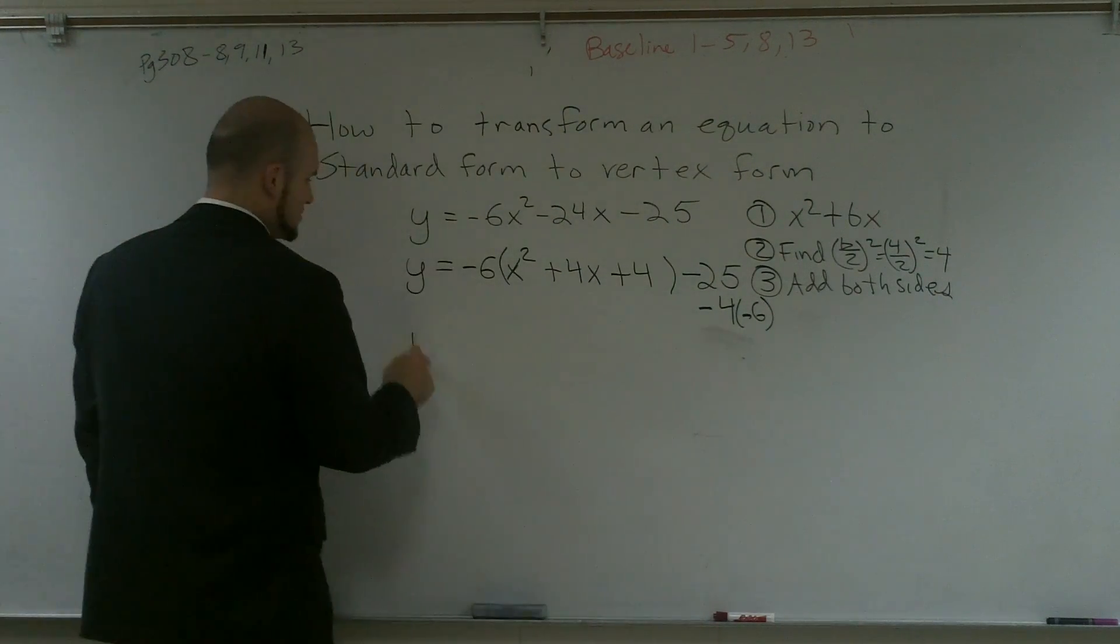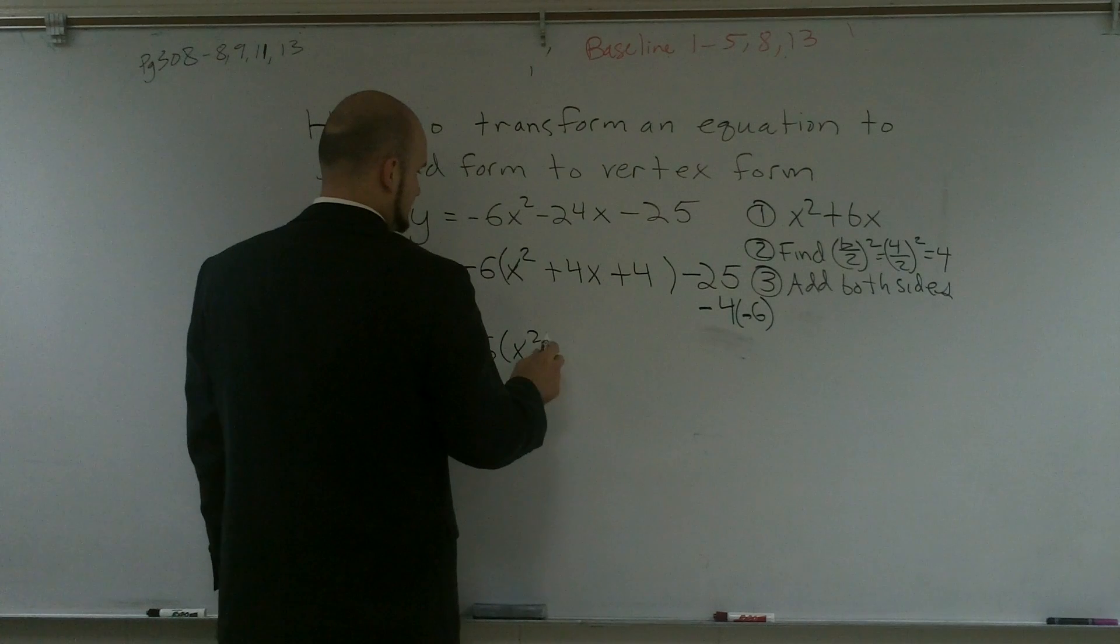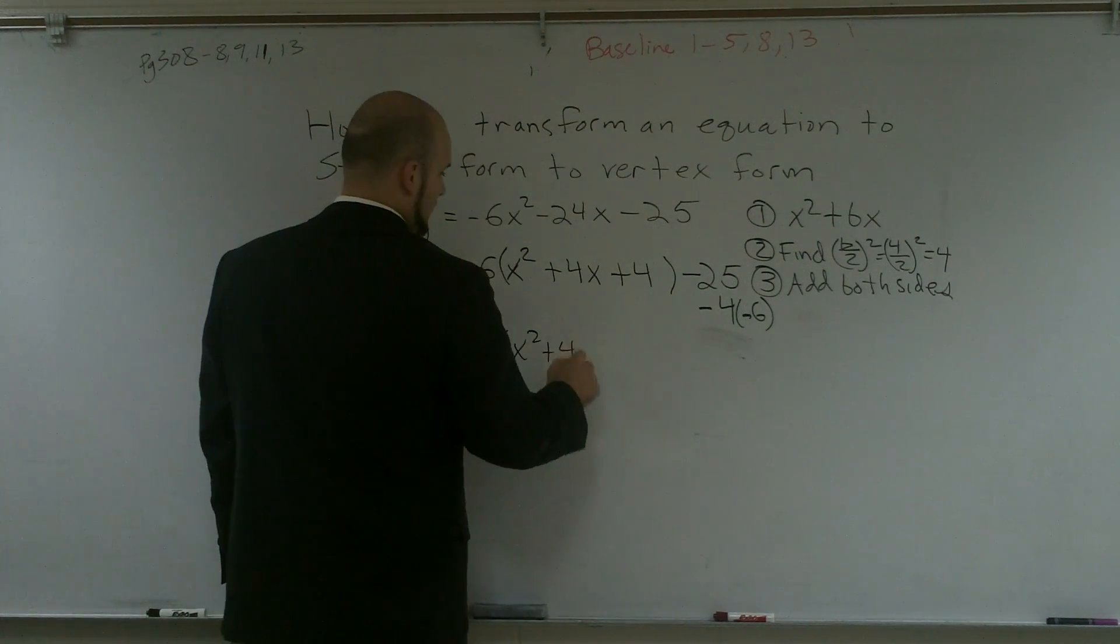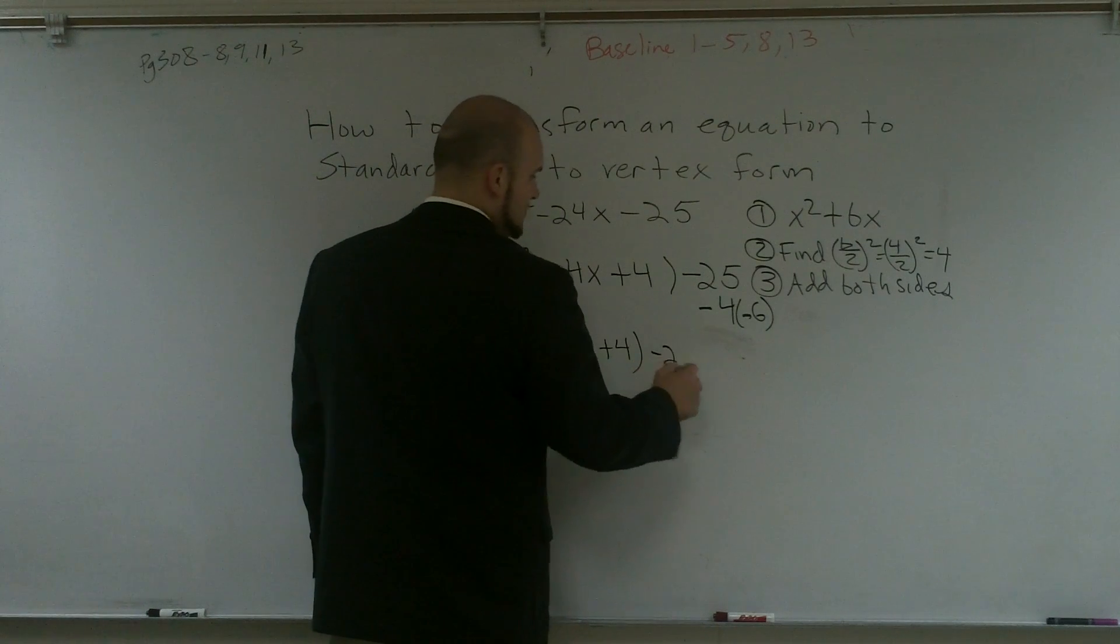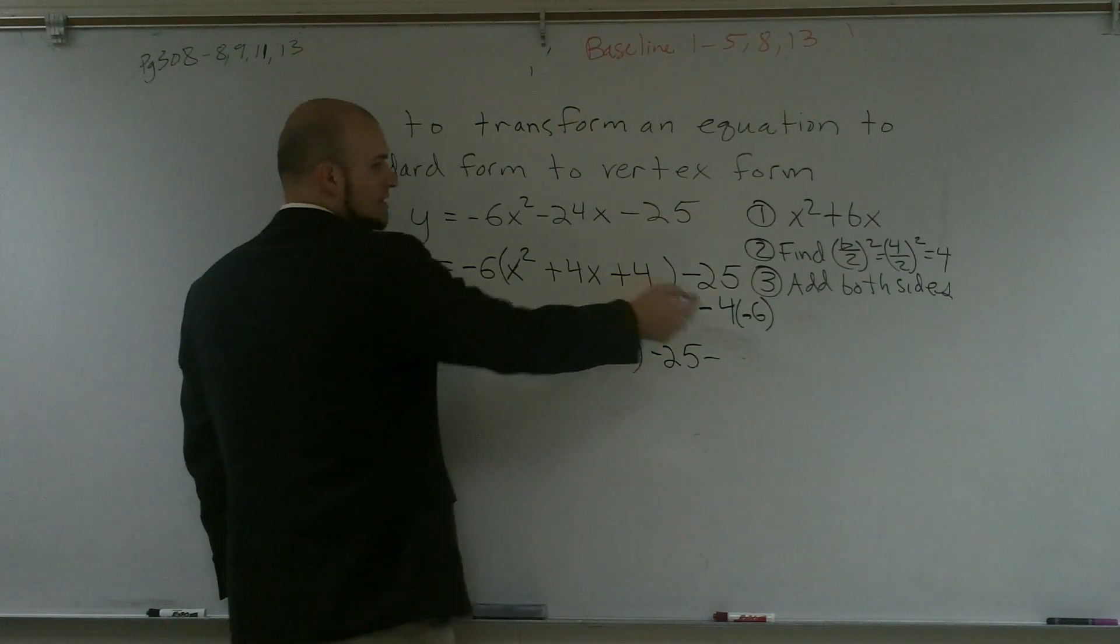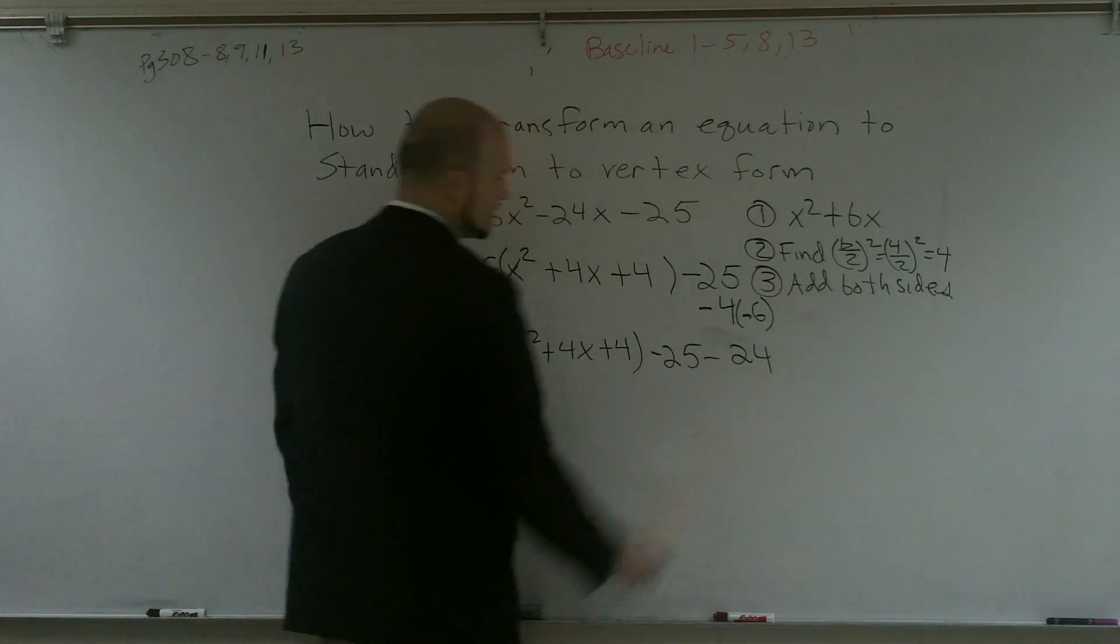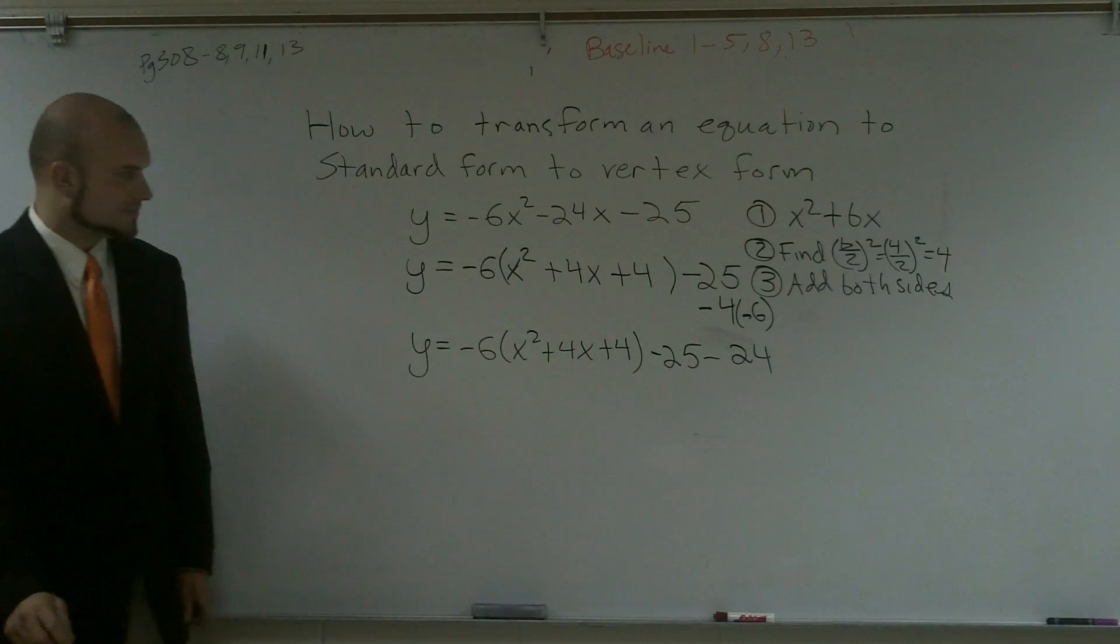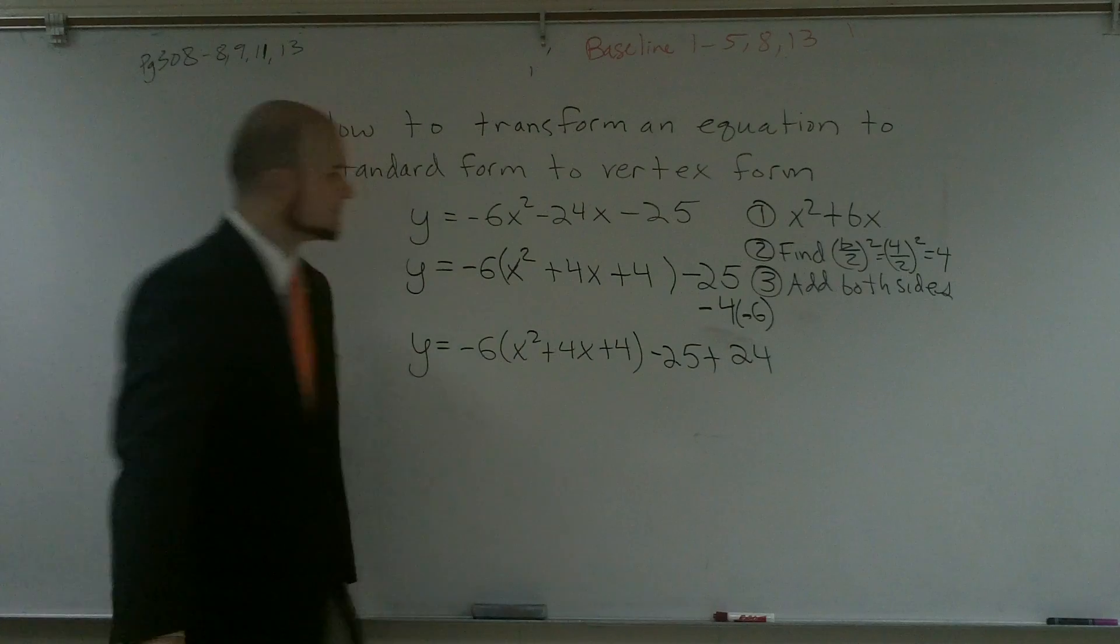So let me rewrite this. I get y equals negative 6 times x squared plus 4x plus 4, and then this is negative 25 minus negative 24. Because remember, I have to add a 4 and subtract 4, but you have to multiply by negative 6. Wouldn't that be a positive though? Yes, it's going to be a negative times negative would be positive.